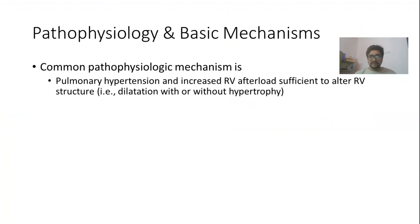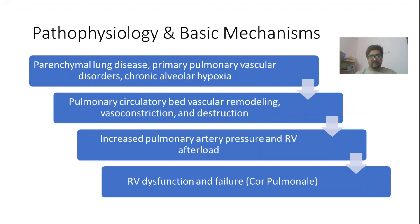The basic mechanism behind the development of cor pulmonale is the presence of pulmonary hypertension. When there is pulmonary hypertension, there is increased RV afterload, and this increased RV afterload in the long term can alter the RV structure, causing dilatation with or without hypertrophy of the right ventricle. Parenchymal lung disease, pulmonary vascular disorders, and chronic alveolar hypoxia all lead to pulmonary circulatory vascular remodeling, vasoconstriction, and destruction, eventually increasing pulmonary artery pressure and right ventricular afterload.